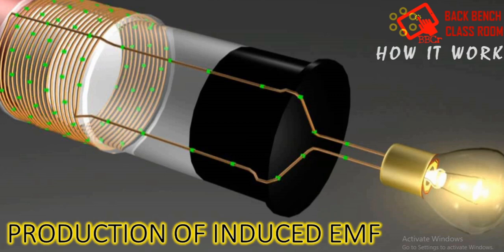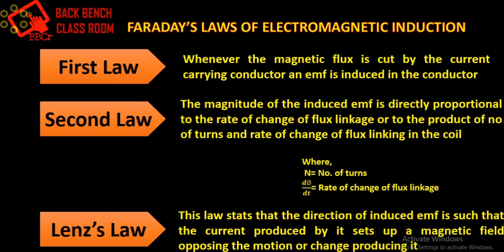The production of induced EMF basically depends upon Faraday's law of electromagnetic induction. Faraday's first law of electromagnetic induction states that whenever the magnetic flux is cut by any current carrying conductor, an EMF is going to be induced in this particular conductor.